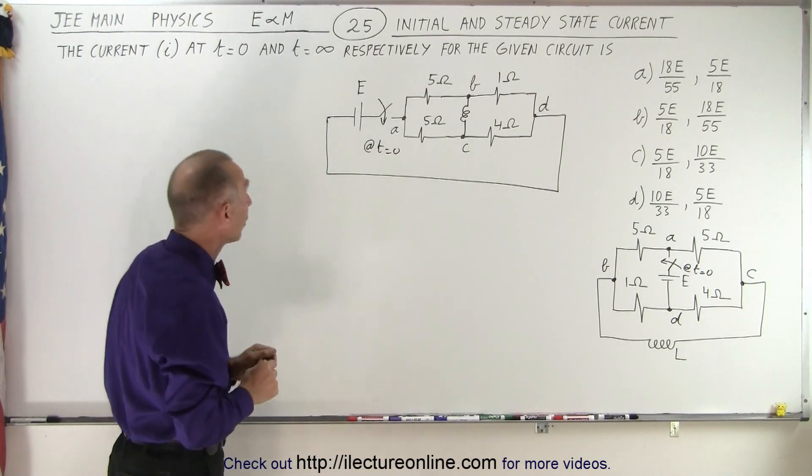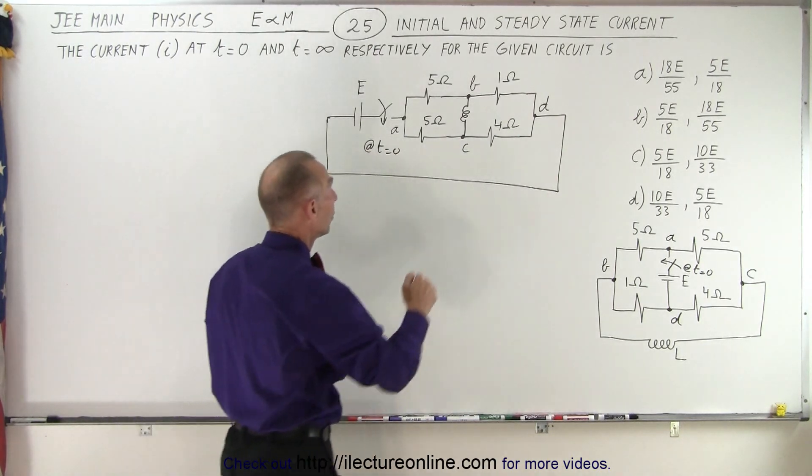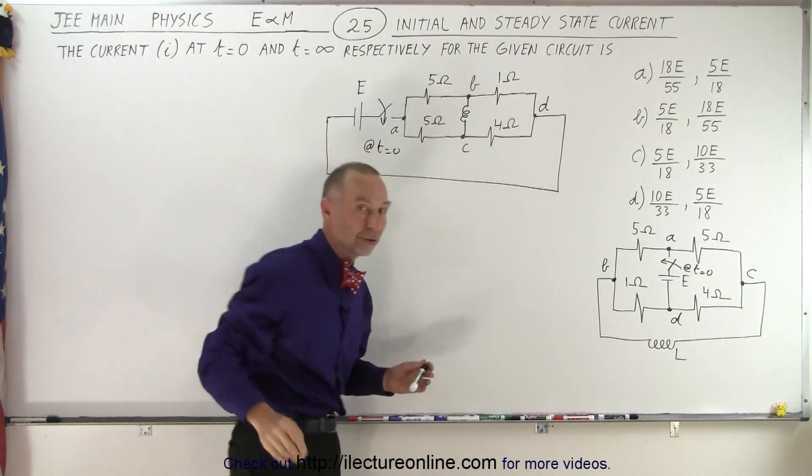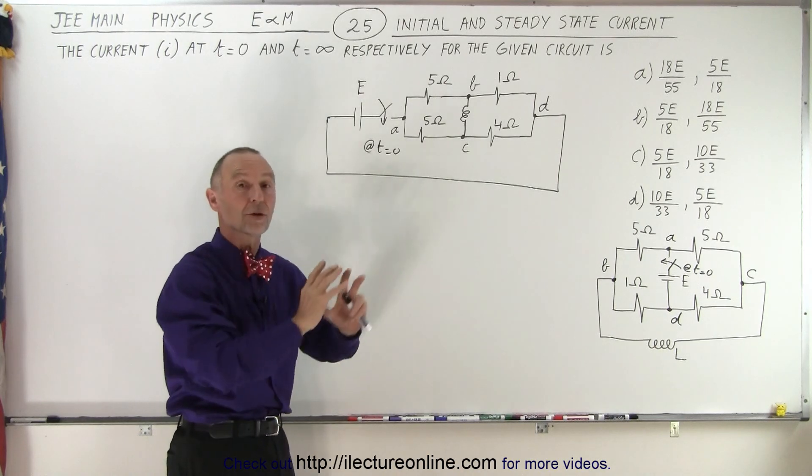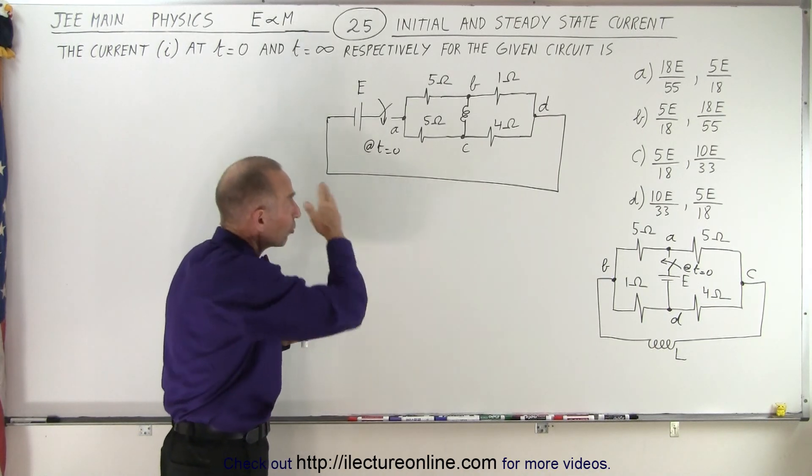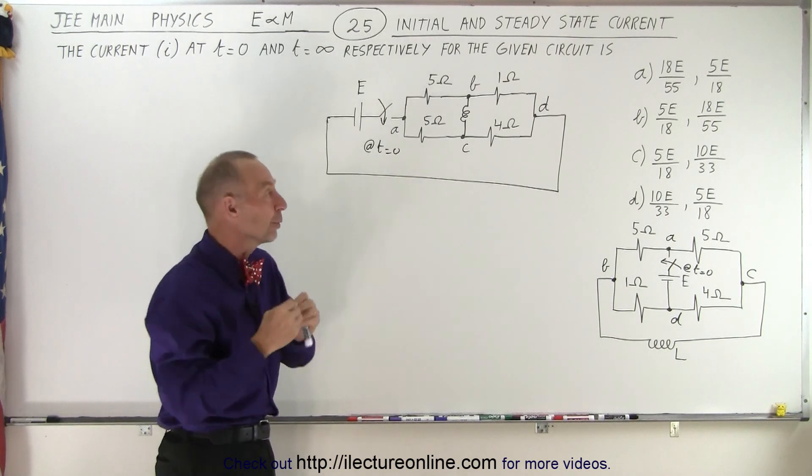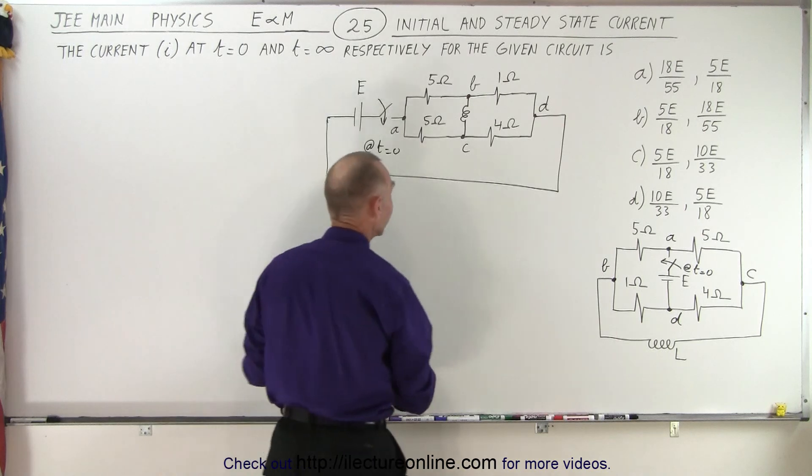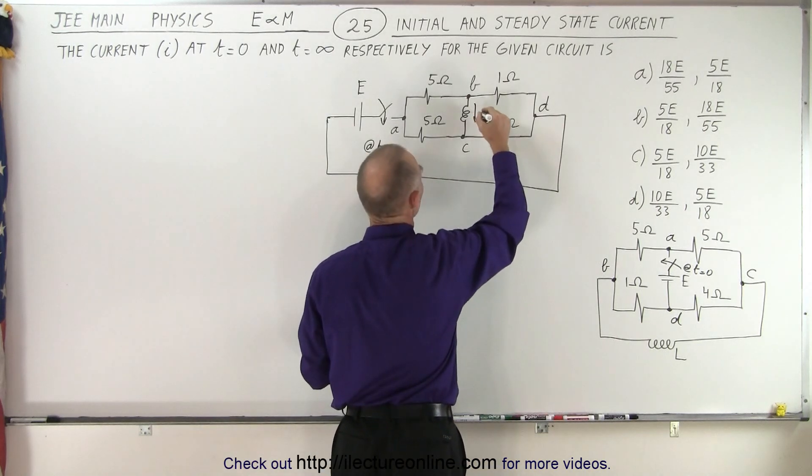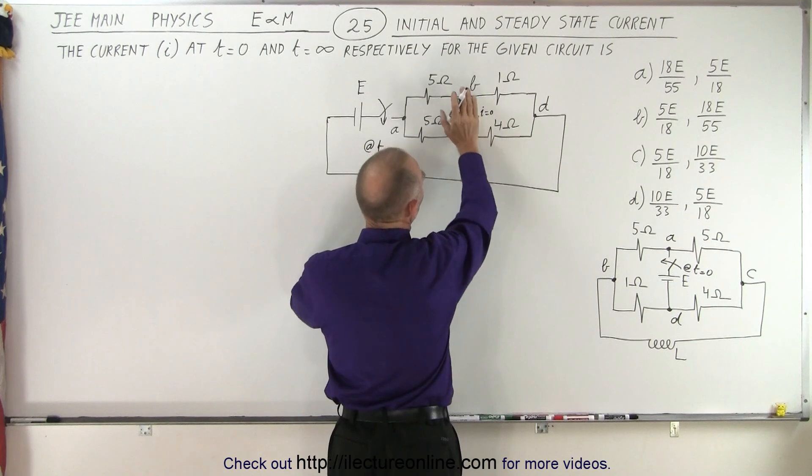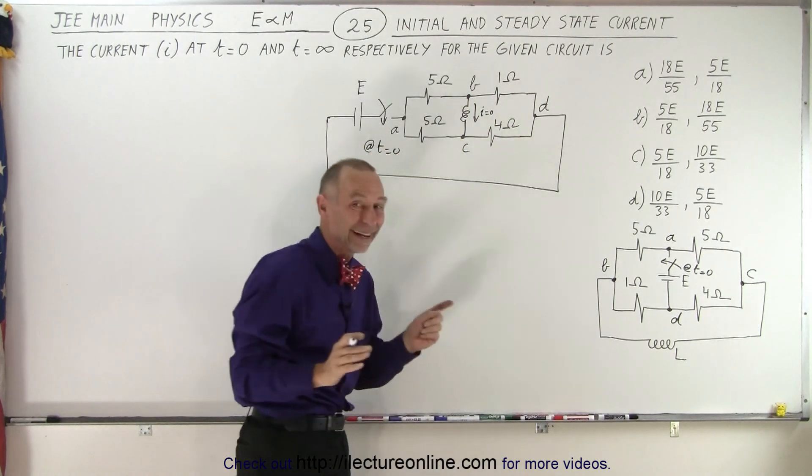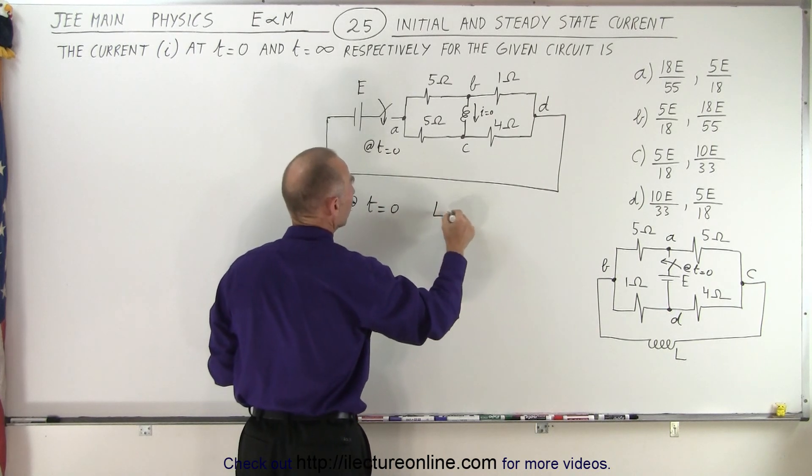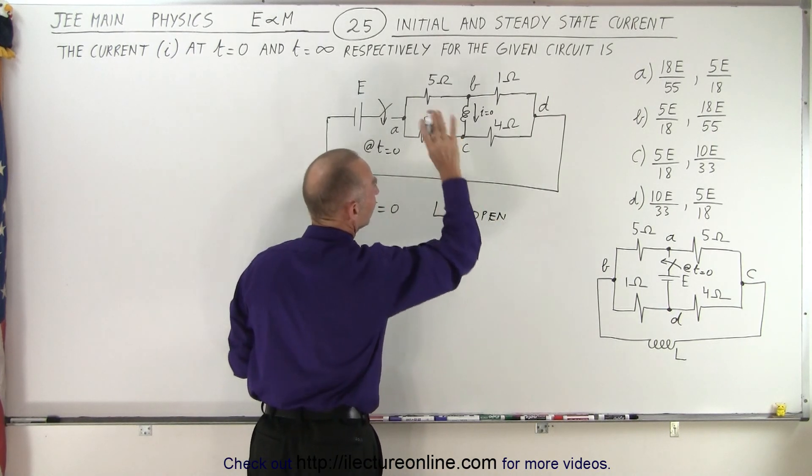So now the key to the problem, at time equals zero, when the switch first closes at that moment, we had no current through the inductor. And remember, inductors oppose a change in current, so as soon as the switch closes, current doesn't immediately begin to flow in the inductor. At time equals zero, there's no current to the inductor, so we can say at that point, I equals zero. So I equals zero to the inductor, and it's as if that inductor isn't there, at T equals zero. So at T equals zero, the inductor becomes an open circuit. It's like it's not there.